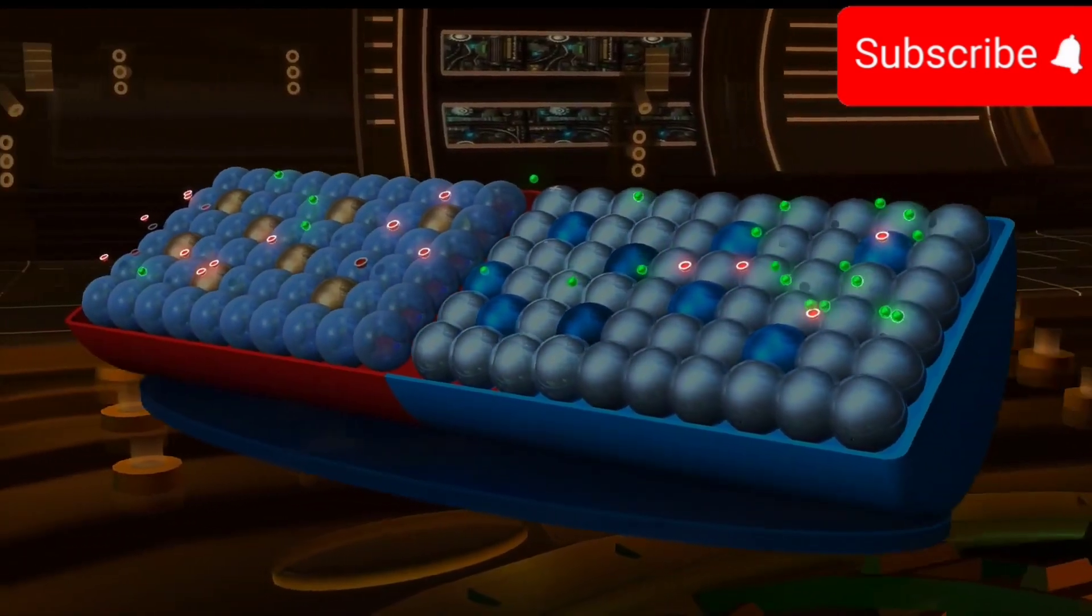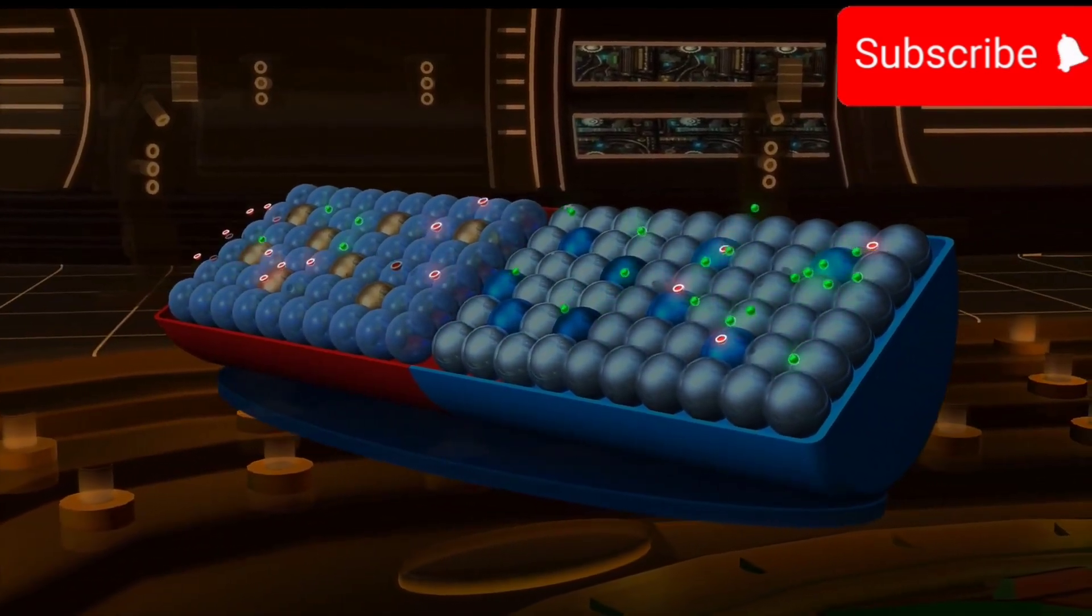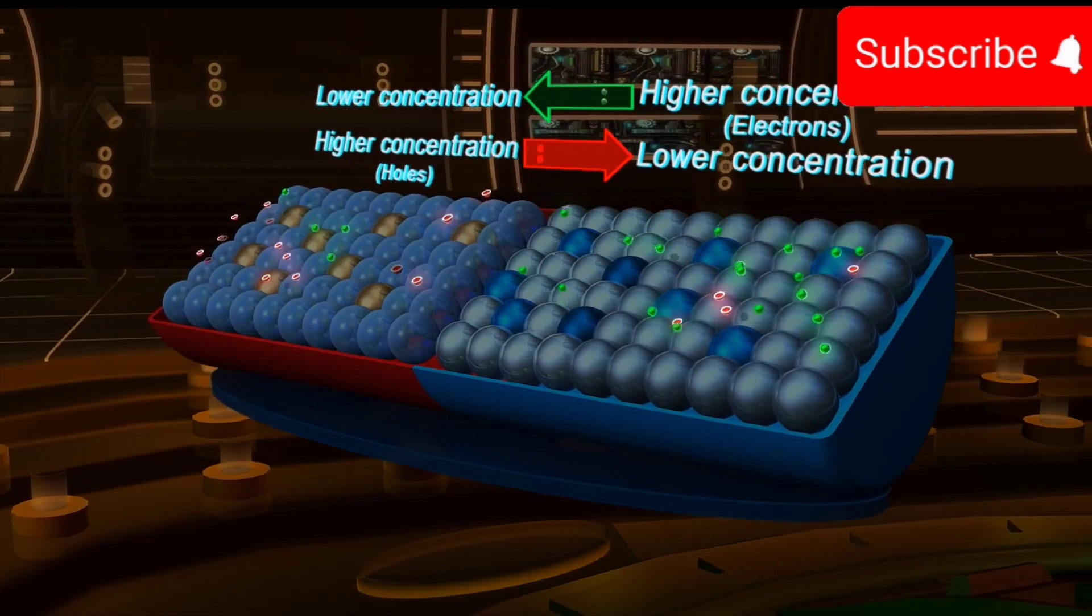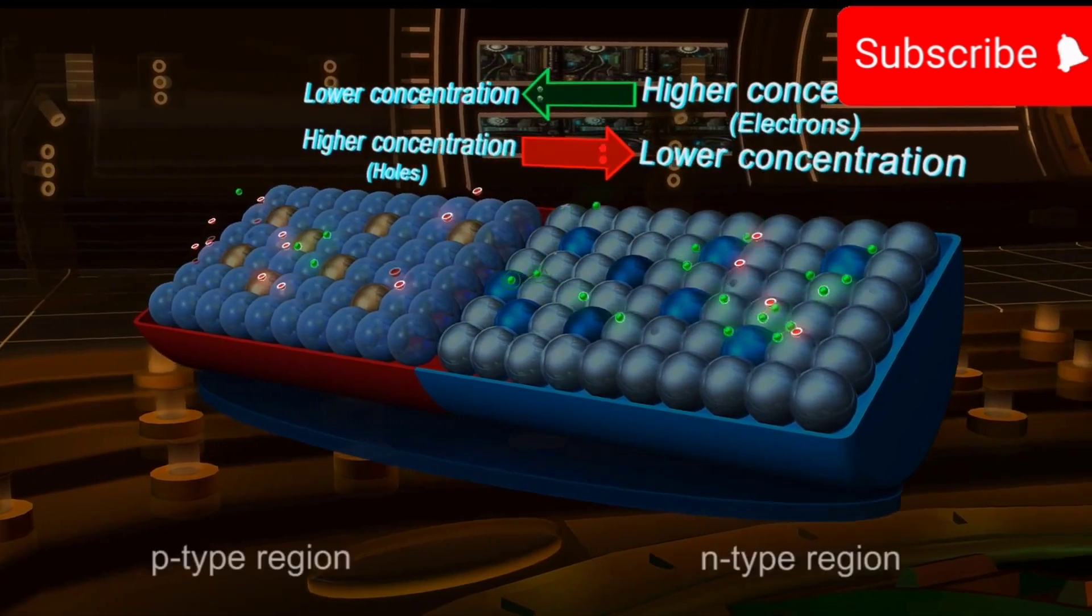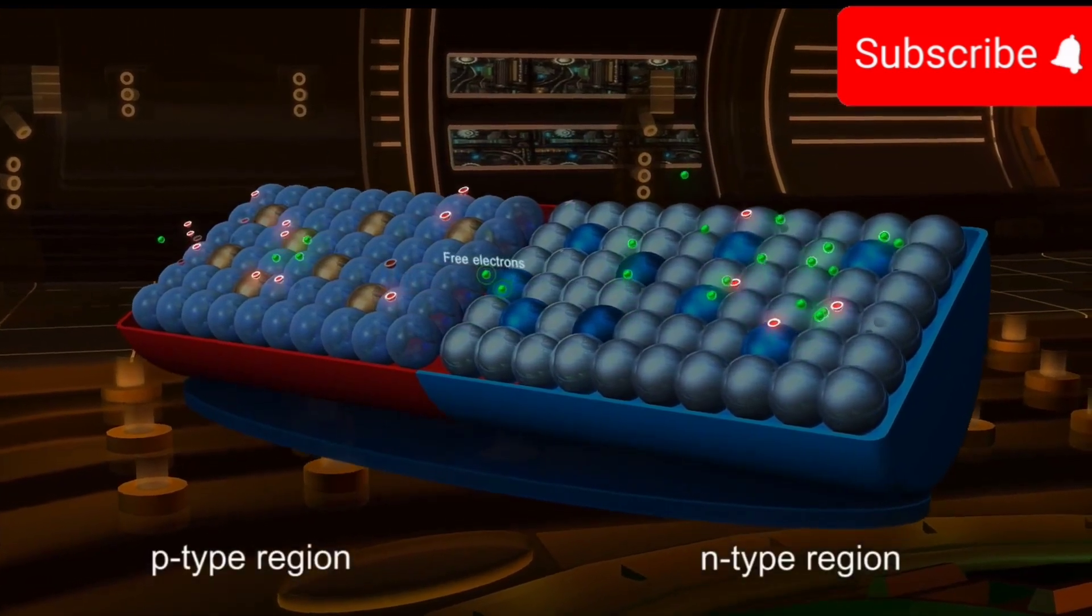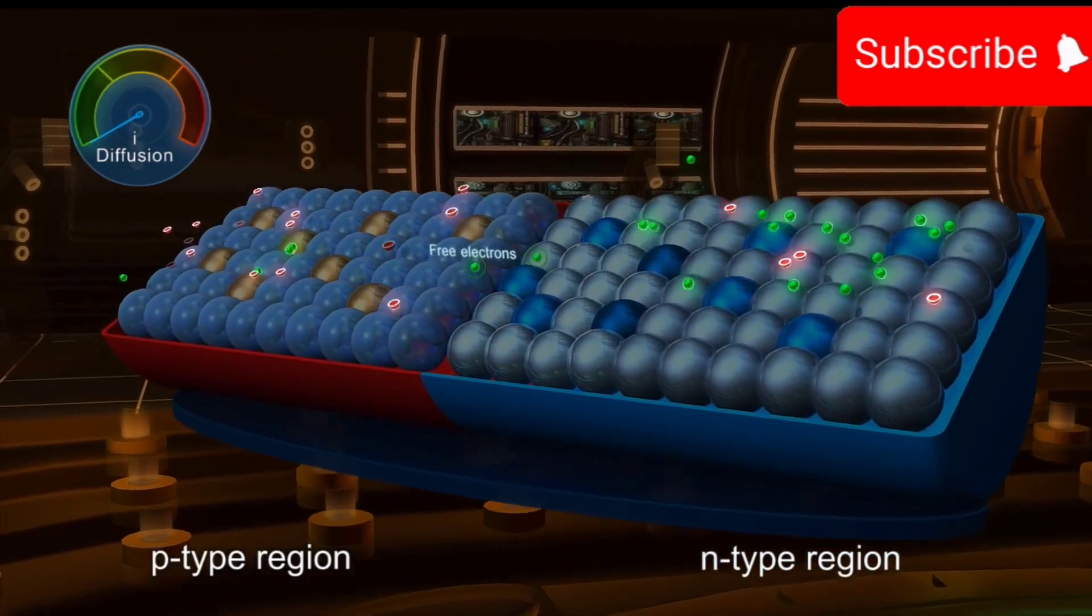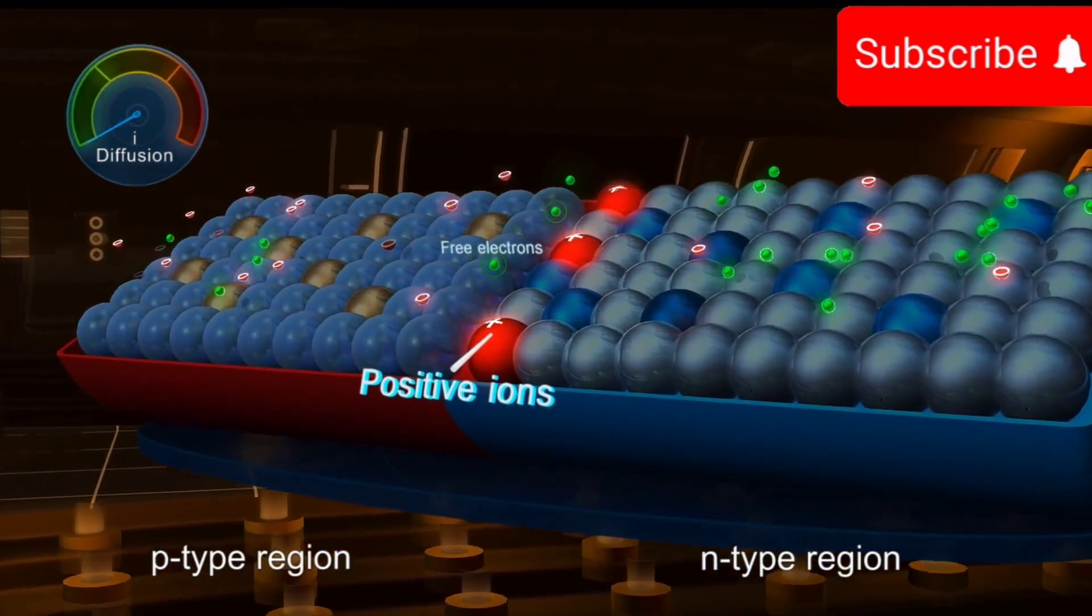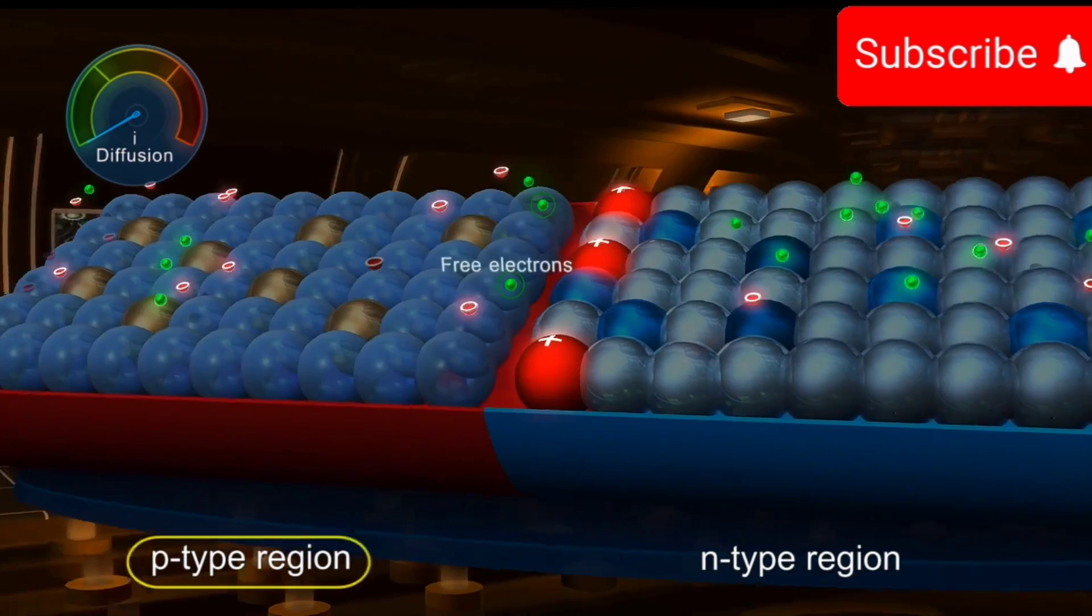The majority charge carriers begin to diffuse from the region of higher concentration to the region of lower concentration. The free electrons in N region leave behind positive immobile ions near the junction and diffuse into P region.